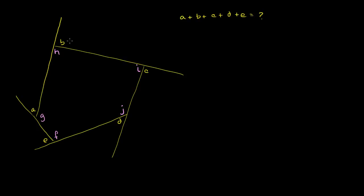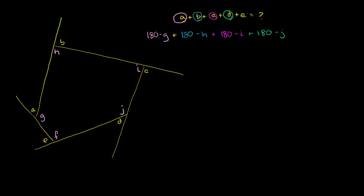So the sum of these particular exterior angles: A is the same thing as 180 minus G, because A and G are supplementary. Then we have plus B, but B we can write in terms of this interior angle — it's going to be 180 minus H, because these two angles are supplementary. So this is 180 minus H. And we can do the same thing for each of them: C we can write as 180 minus I, D as 180 minus J, and finally E we can write as 180 minus F.